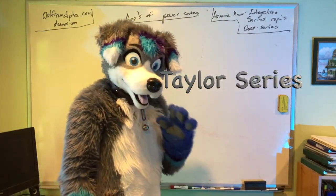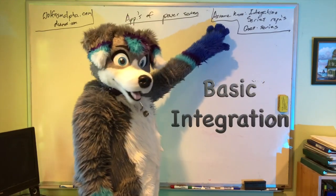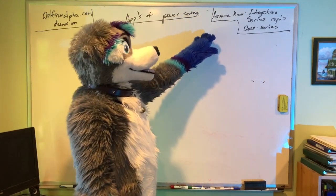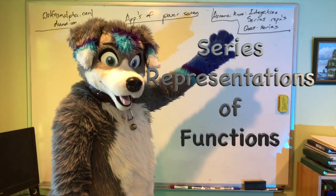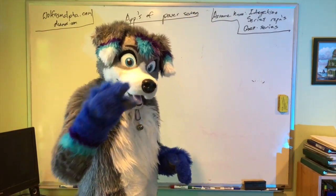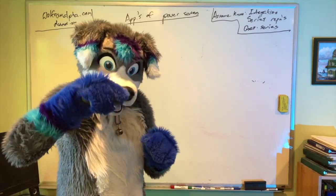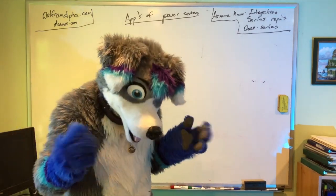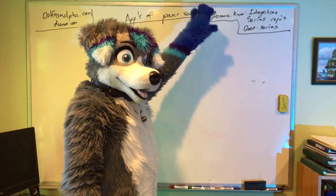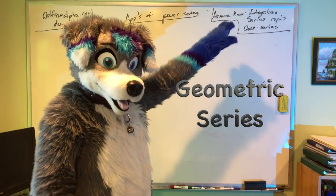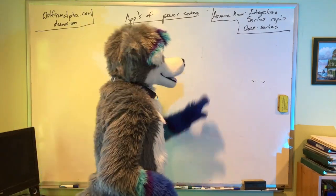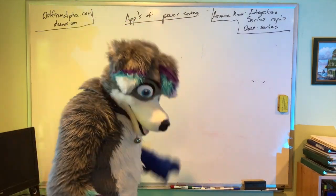I will assume that you know basic integration — basically the power rule in integration — and the series representations of functions. For example, e to the x is the sum of x to the n over n factorial. So series representations of functions and geometric series — that's the sum of x to the n equals 1 over 1 minus x. Anyway, I'll assume you know those.